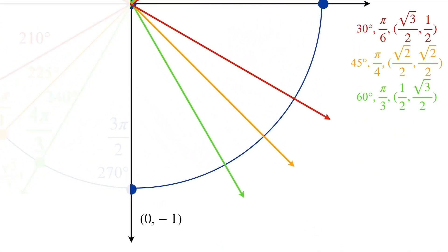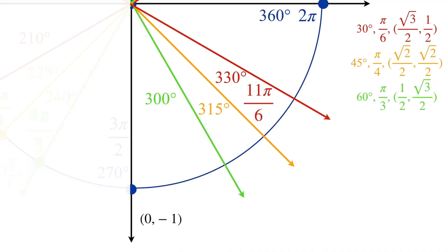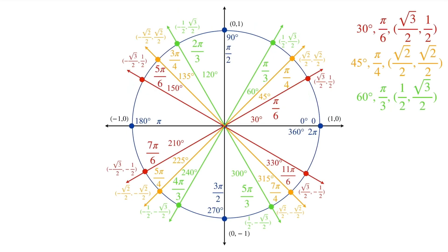Now let's take a look at the fourth quadrant. This here is 360 degrees, because it's a full circle, and in radians that's 2pi. This right here is a 30-degree reference angle, which means this in standard position is 360 minus 30, which is 330 degrees. We do the same for the other two angles: 360 degrees minus their reference angles gives those angles. In radians, 2pi minus pi over 6 gives 11pi over 6, and 2pi minus the other reference angles gives 7pi over 4 and 5pi over 3. The points are the same as the first quadrant except they have negative y values, because the fourth quadrant has negative y values. Now, if we zoom out, we have completed our full unit circle.